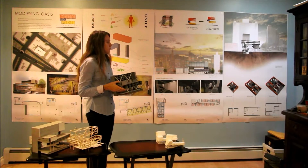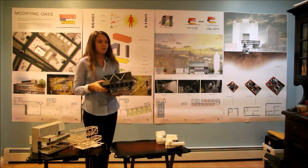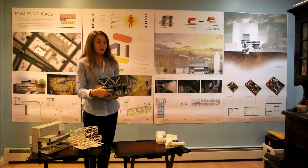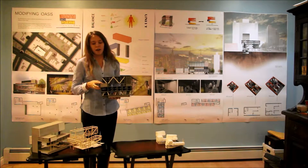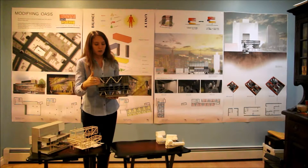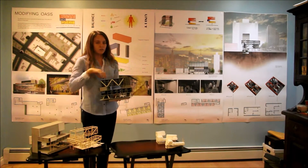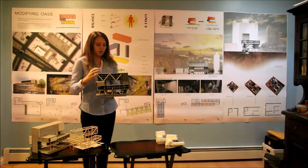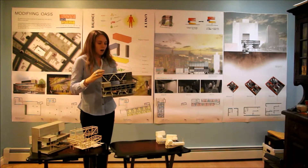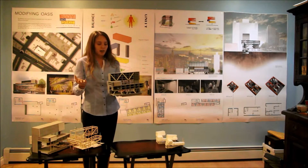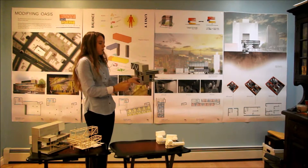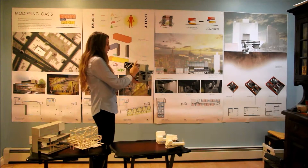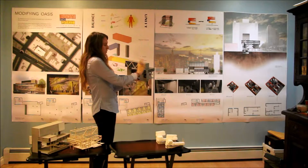The 900 square foot unit has two bedrooms and a balcony, the 600 square foot unit has one bedroom and a balcony, but the 300 square foot units do not have a balcony. However, there are balconies scattered throughout the building on multiple floors.